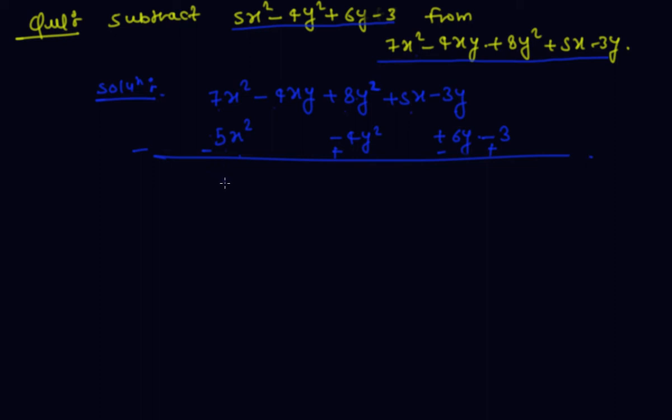Now subtract: 7x square minus 5x square is 2x square minus 4xy written as same, plus 4y plus 8y square equals plus 12y square plus 5x minus 6y minus 3y minus 9y plus 3. This is the required answer.